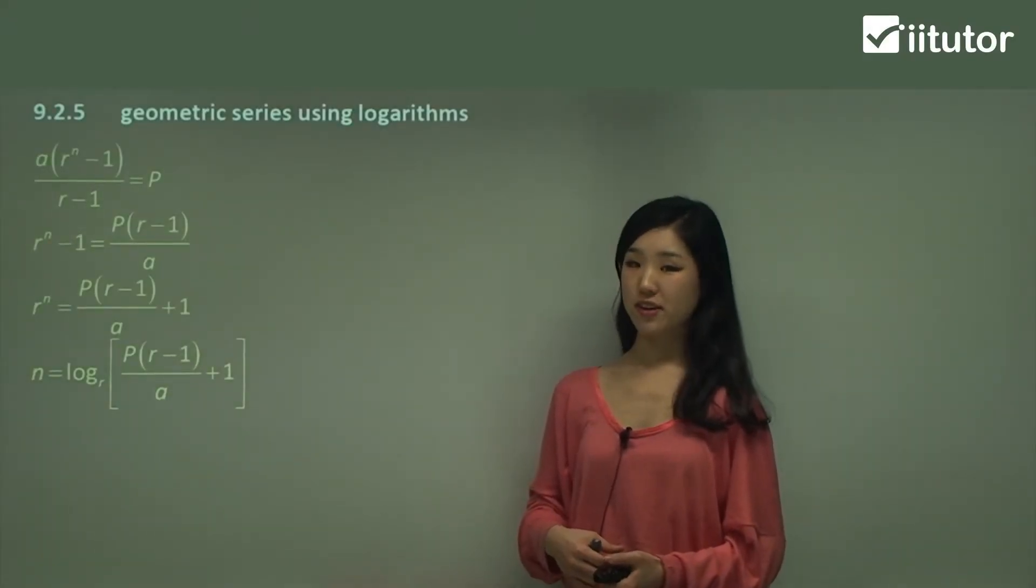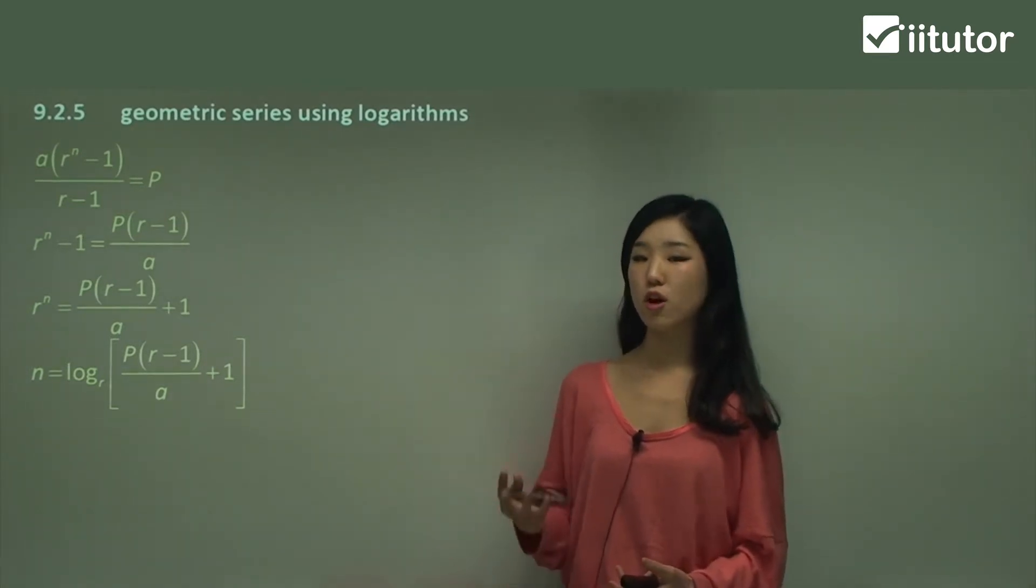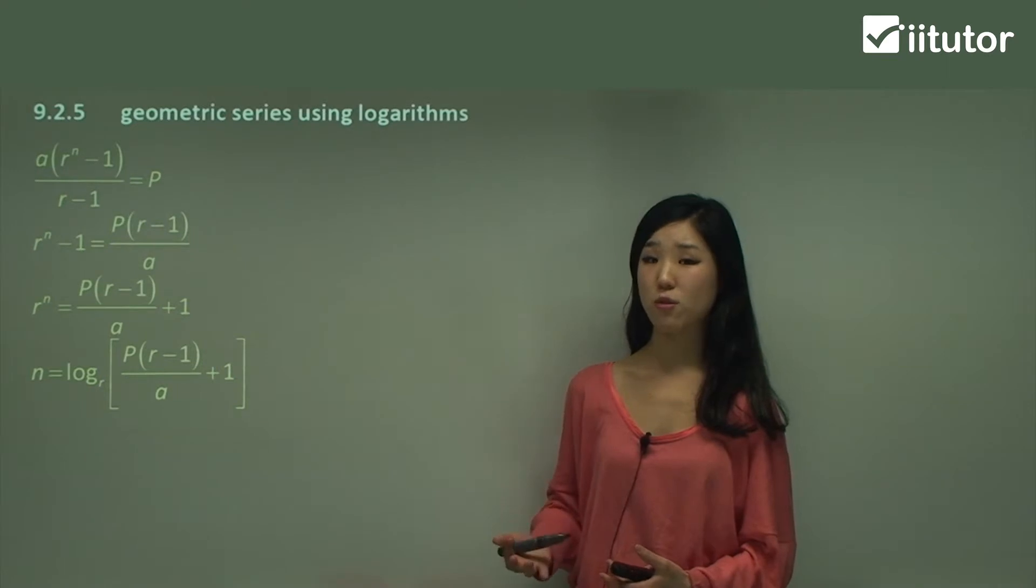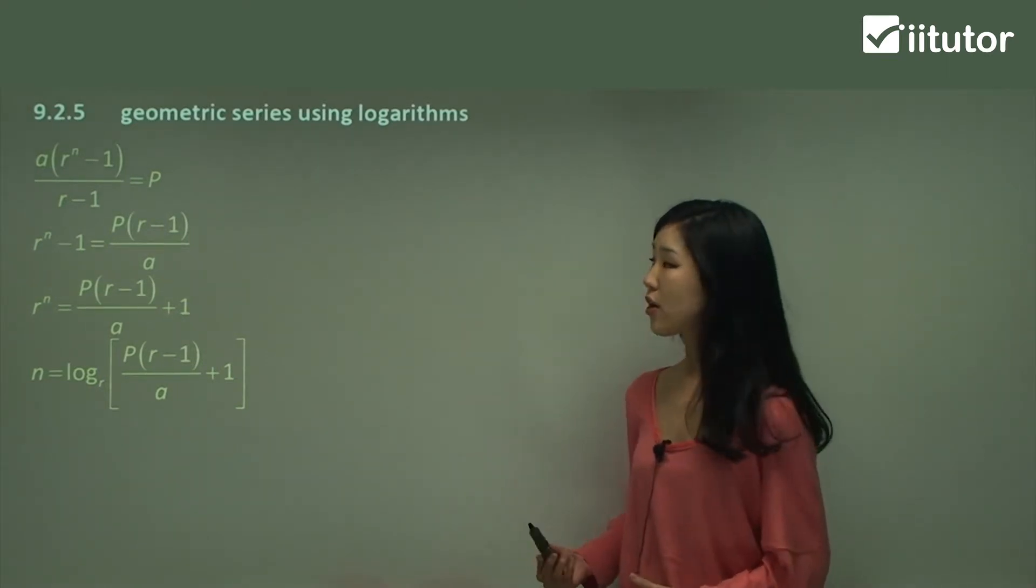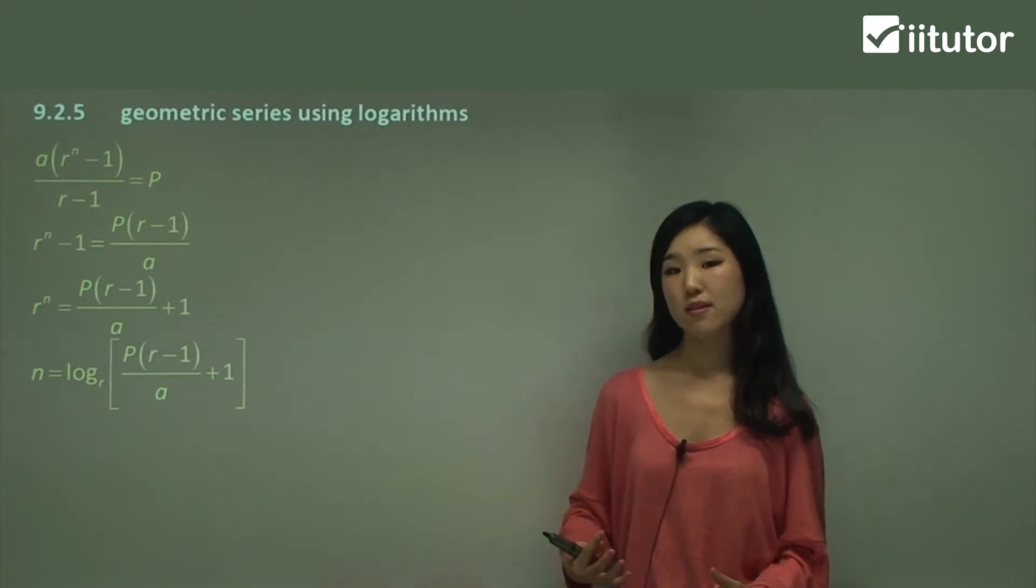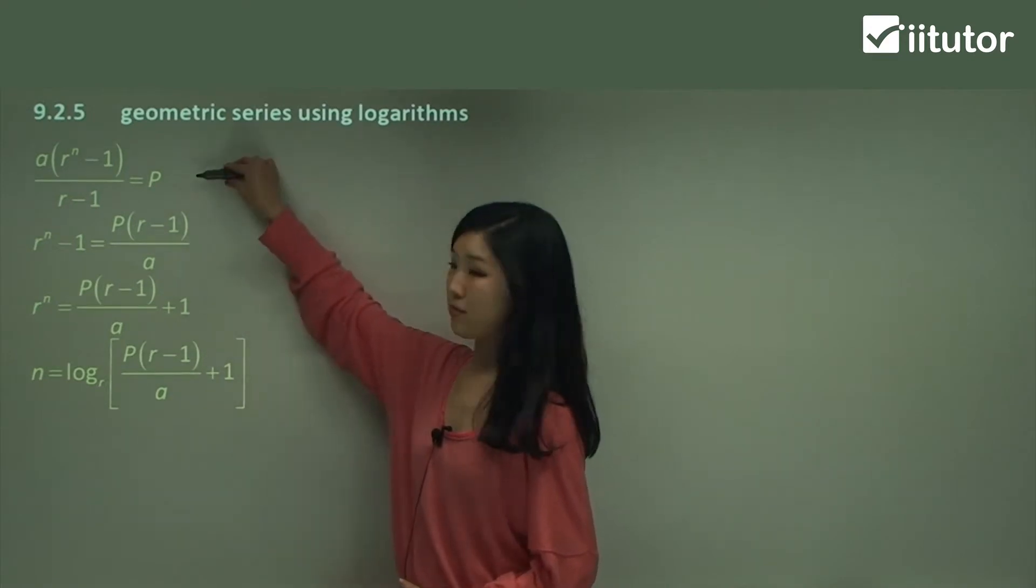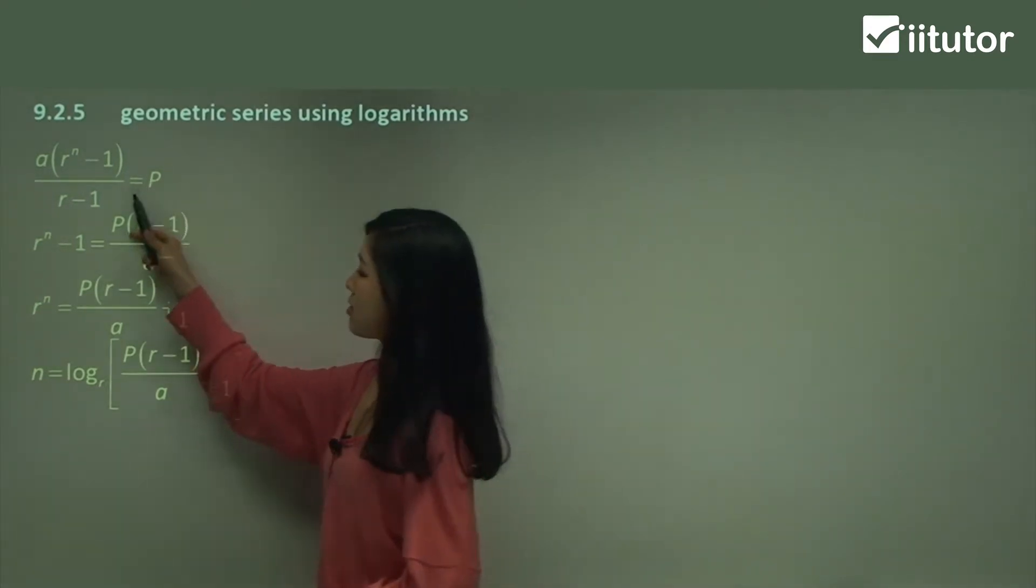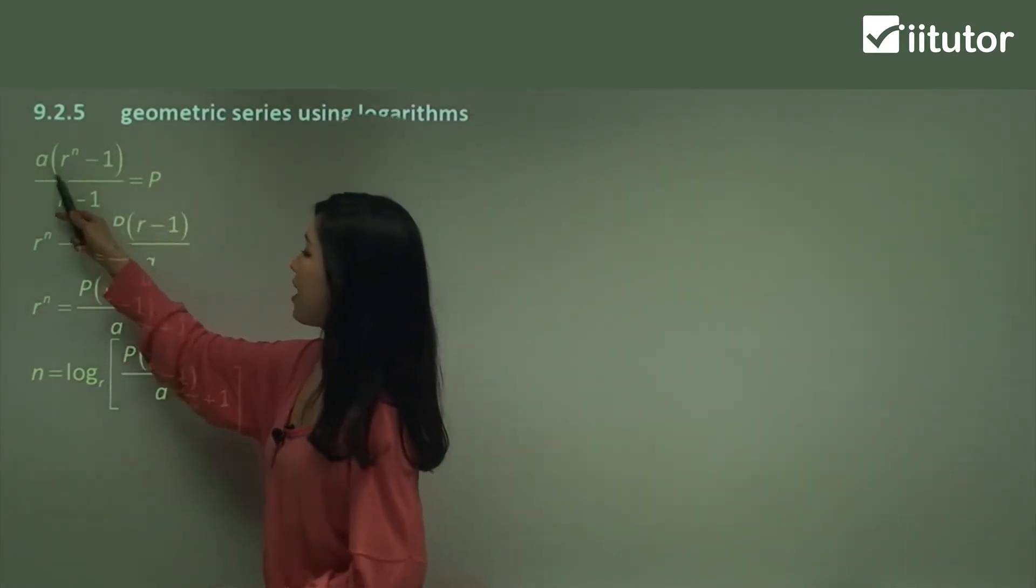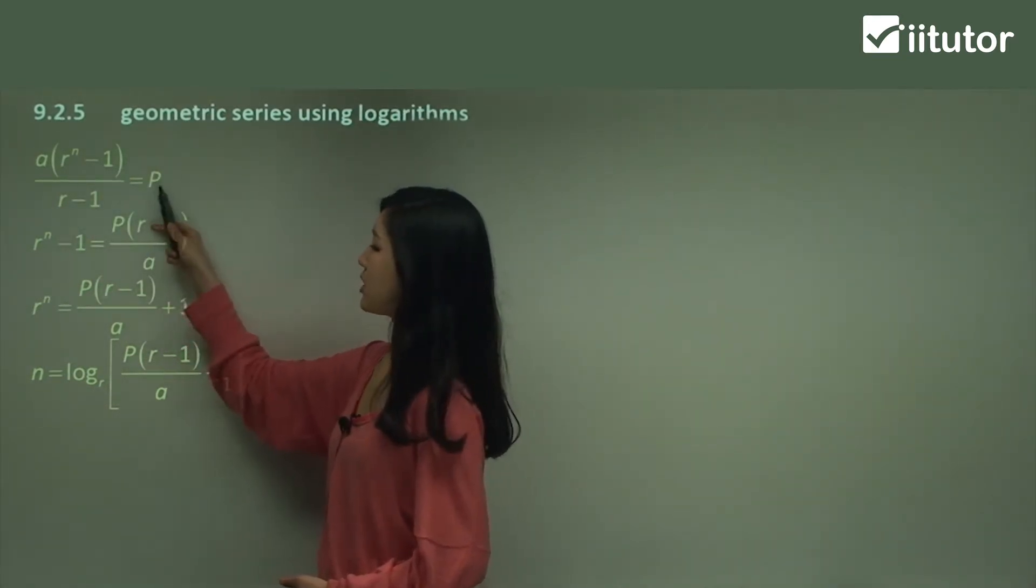Okay, now let's look at geometric series using logarithms. Even with geometric series questions, you need to know your log rules very well because the questions require you to use them. When you're doing a question related to geometric series, basically when you're using the sum formula, you need to apply some log rule when you have something that looks like this. So this is the sum rule, isn't it? a times r^n minus 1 over r minus 1. If that is equal to some value p, then I'm just going to multiply this side by r minus 1.